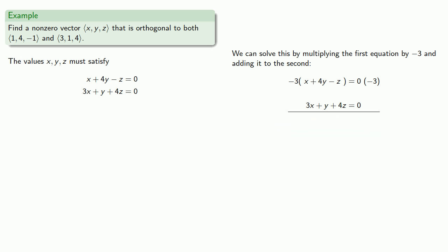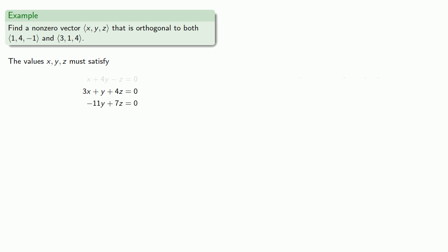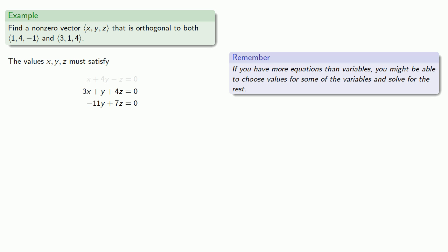So multiplying our equation by -3, and we add our two equations. And we no longer need all three equations. We can drop one of them, and let's get rid of this one. So talking about systems of equations is something you'll spend a lot more time on in linear algebra, but here's a preview. If you have more equations than variables, you might be able to choose values for some of the variables and solve for the rest.